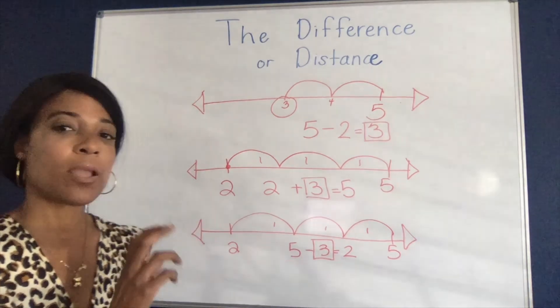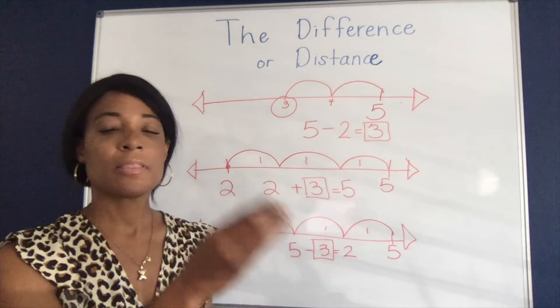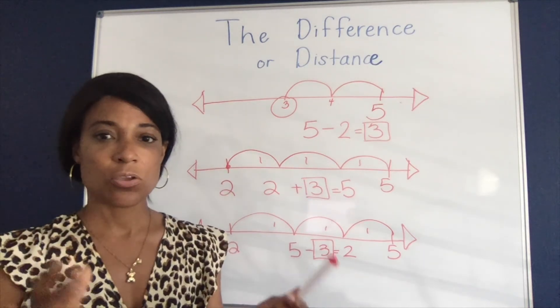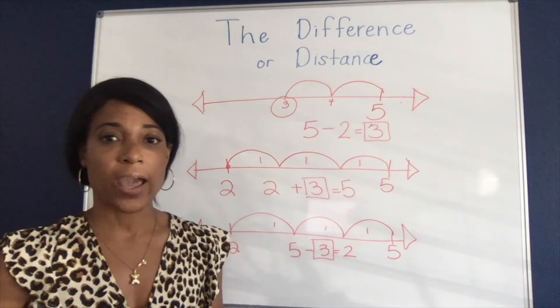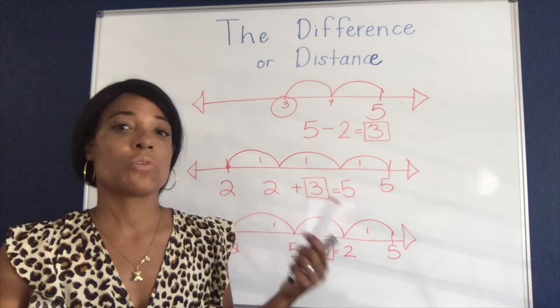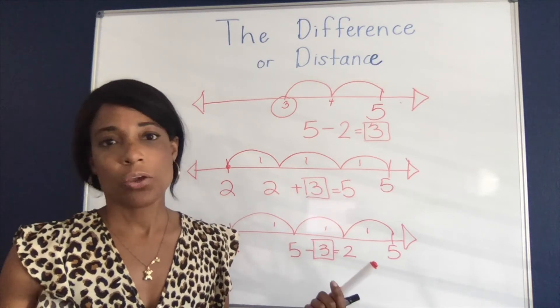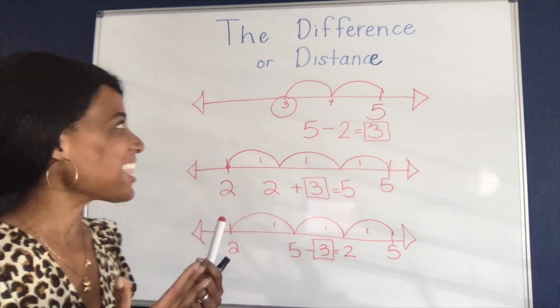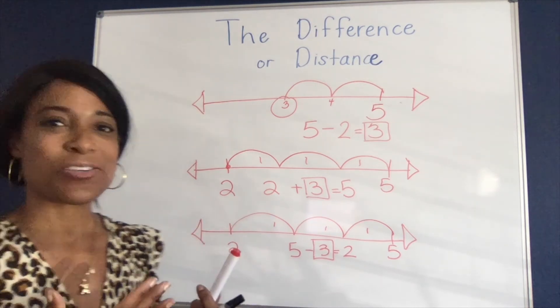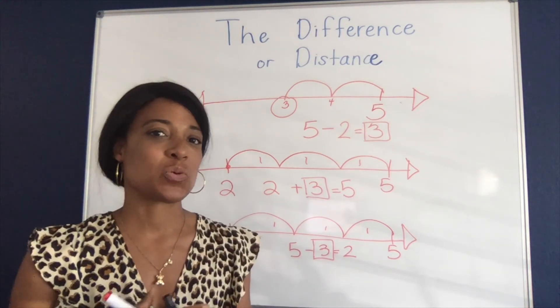So the open number line where kids can count up, they can count back to find the difference, or they can count down to take away because that's where they are right now, are fantastic tools for students to grow their learning. They're all going to go through different stages at different times. But I like this one because it helps students to see that there's relationships between numbers.